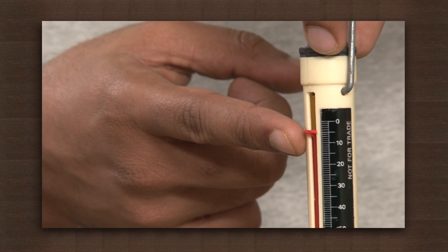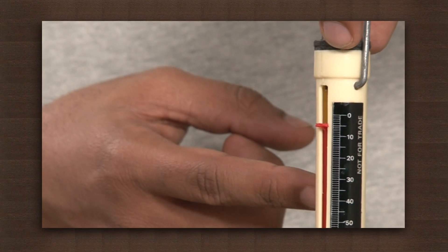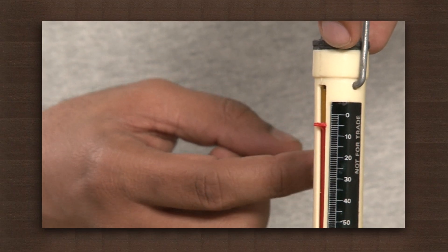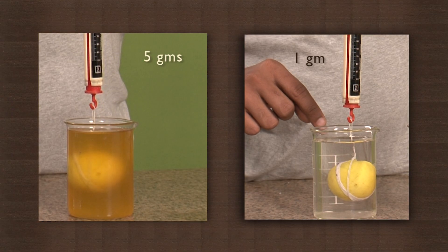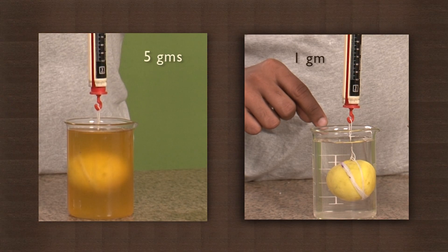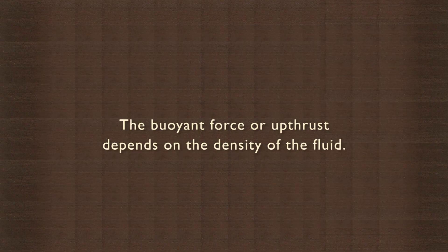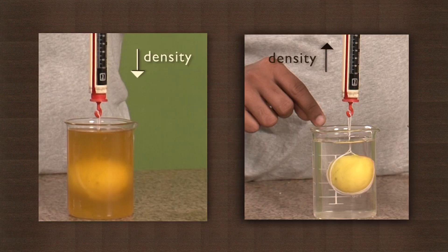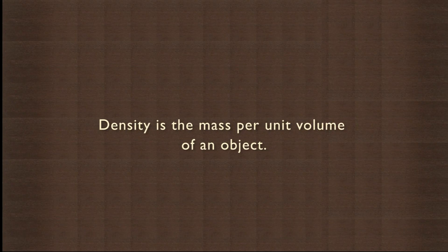The weight of the lemon is less in the two liquids as compared to air because of upthrust. But why is there a difference in the weight in the two liquids? Why is the weight in water less than in oil? The answer is density. The buoyant force or upthrust depends on the density of the fluid. The density of oil is less than that of water. Density is the mass per unit volume of an object.